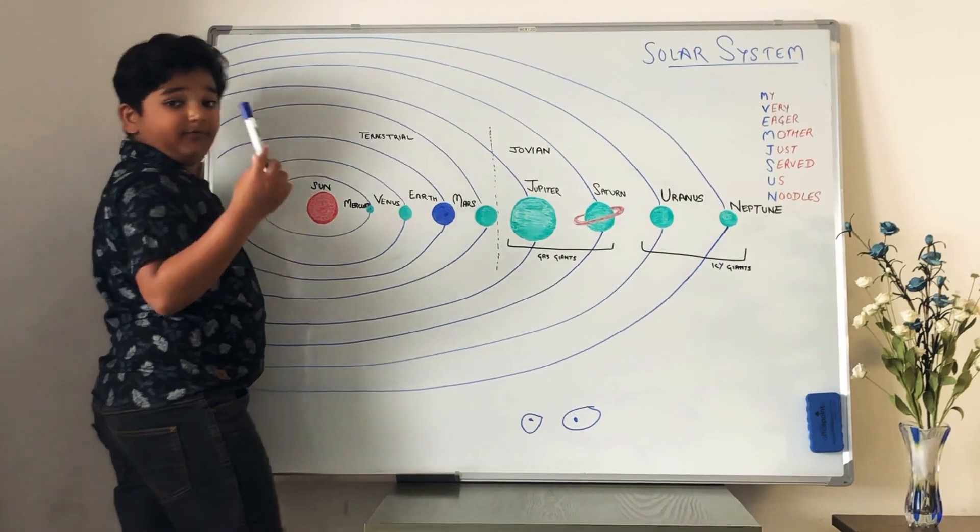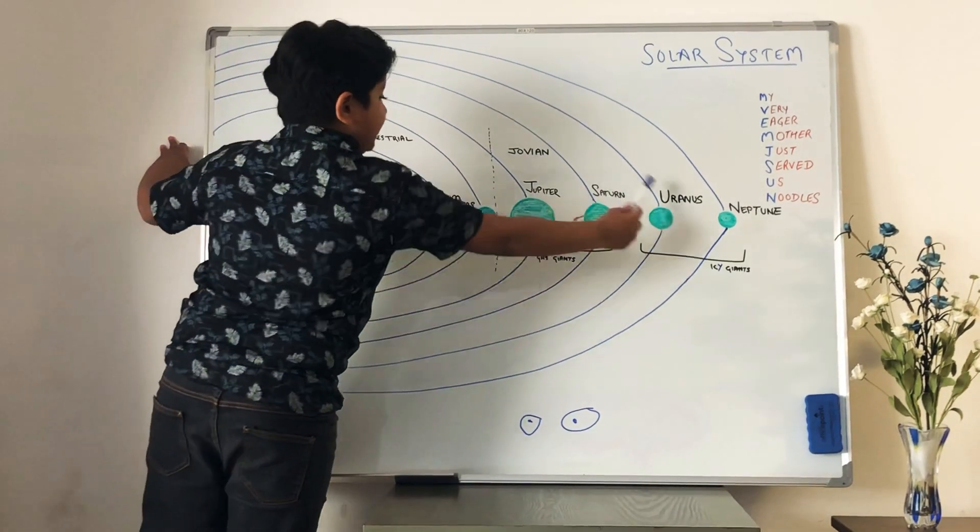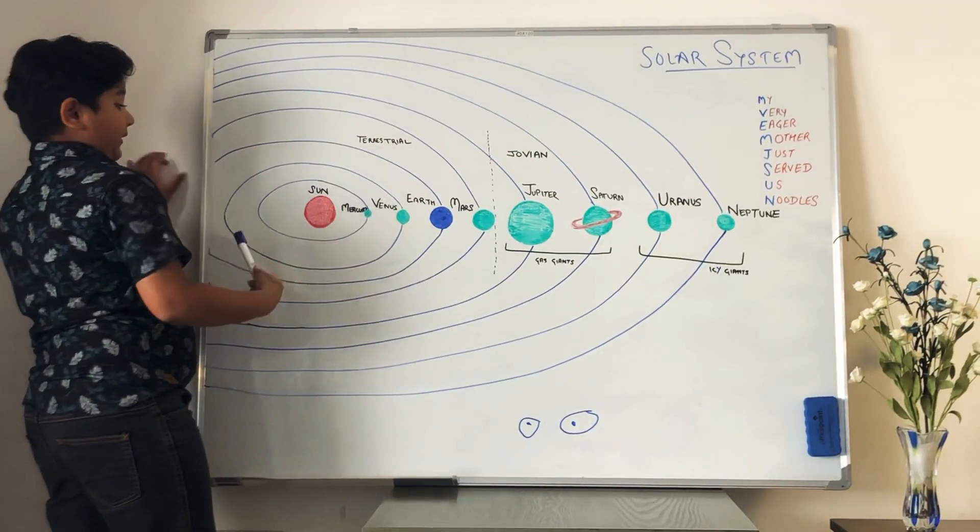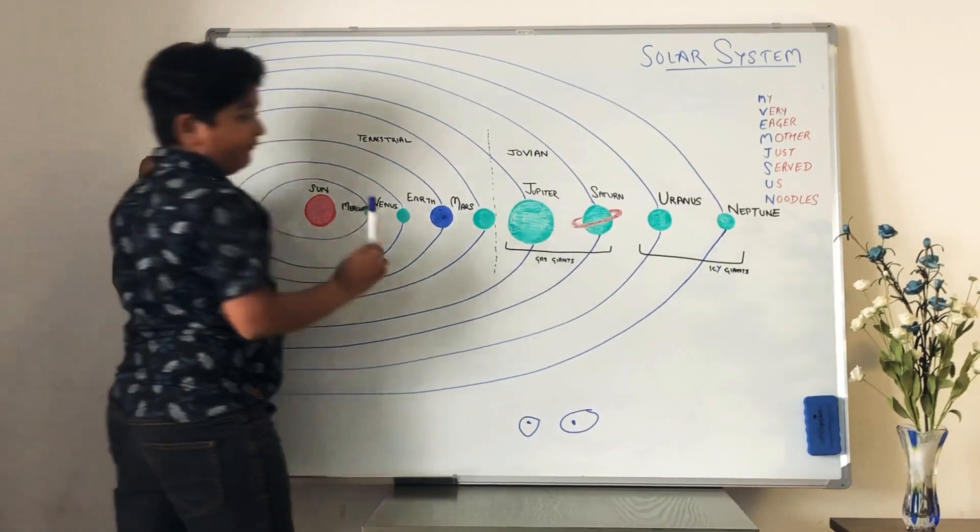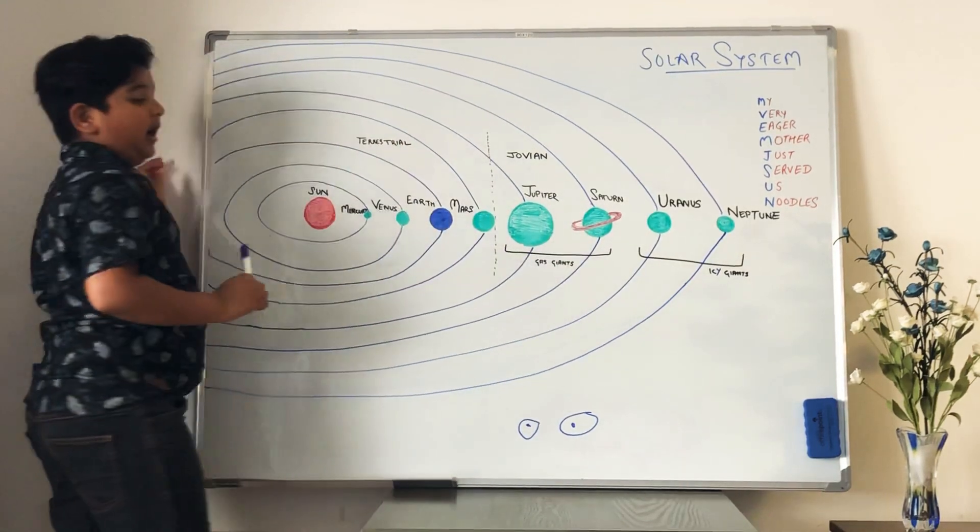And the difference between these planets and these planets are the planets that are close to the sun are hot. And the planets that are far away from the sun are cold.